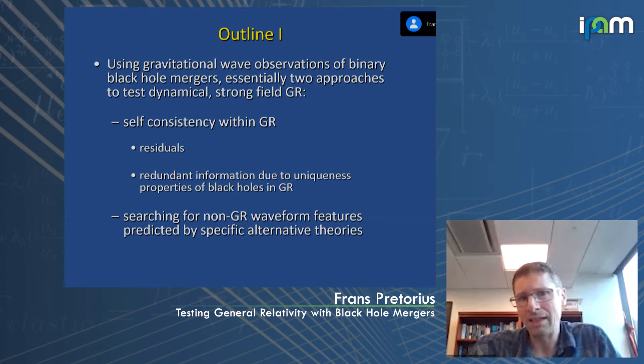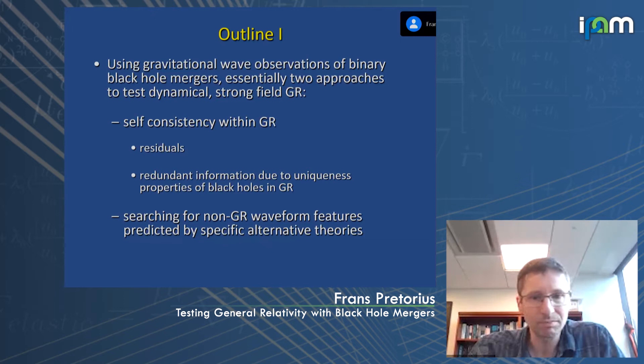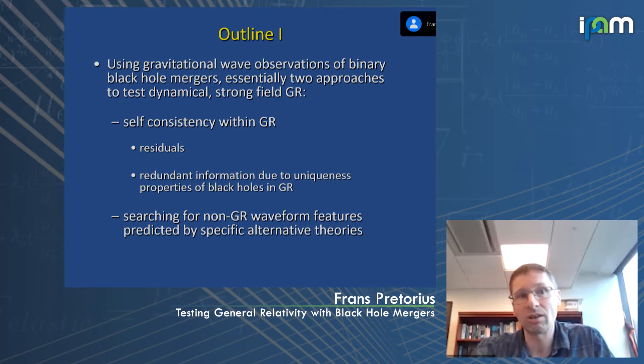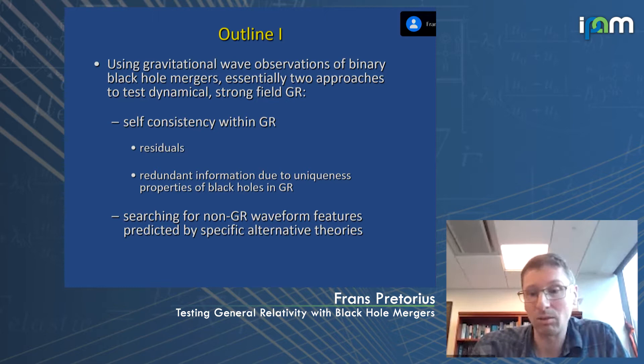One is so-called self-consistency tests within general relativity — not having any particular alternative theory or modified black hole model in mind, but just using general relativity itself. The other approach is if we have some particular modification or exotic compact object in mind: if we can come up with predictions of the waveforms, we can confront that with the data and contrast it with general relativity to either test GR, or discover new physics in black hole mergers using gravitational wave observations.